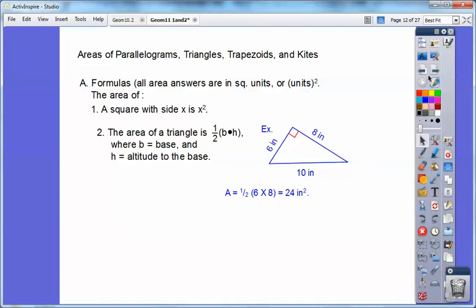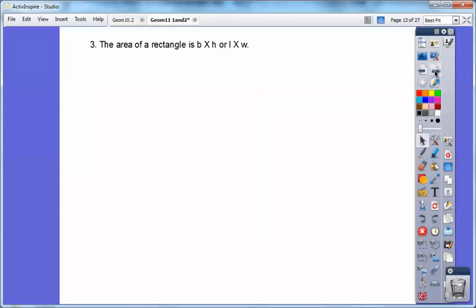The area of a rectangle is base times height or length times width, depending on which textbook you're using. A quick example, 14 times 3 is 42 meters squared. Always in square units.